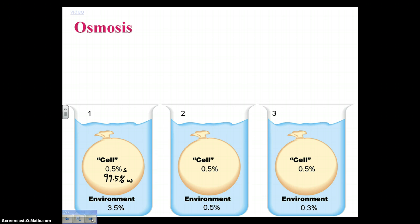The environment, it says, is 3.5% sugar, which makes the remaining portion 96.5% water. So ask yourself, how will water move in this cell environment?